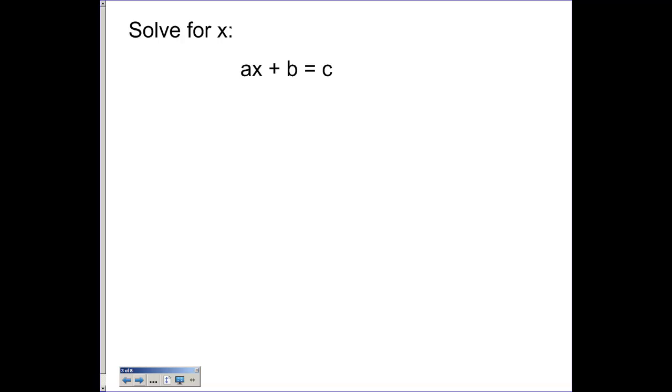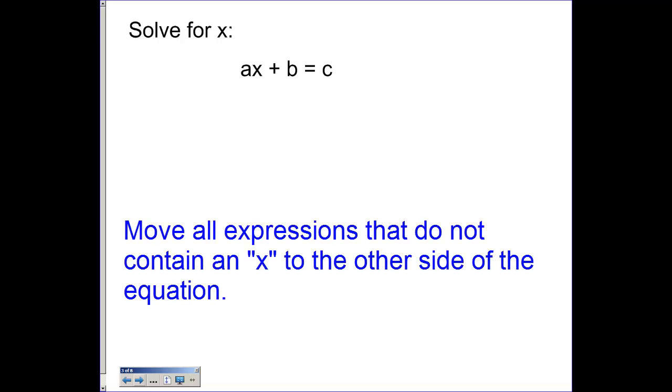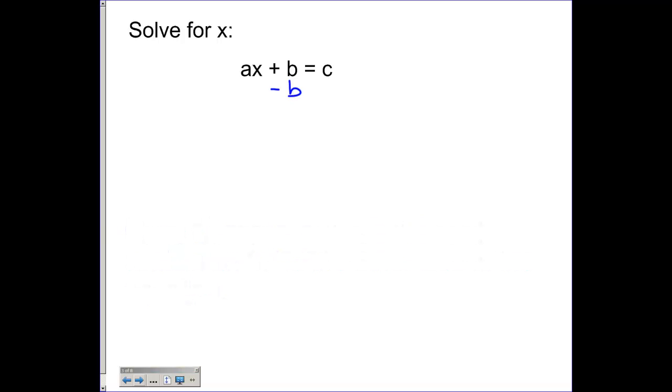Here's that same problem. What we're going to do first is get rid of anything that does not have an x in it to the other side. So we can see that b has no x, so we're going to minus b from both sides. I can make a zero out of these b's, and I can bring my ax down. But since I can't actually subtract c and b, all I can do is express it as c minus b.